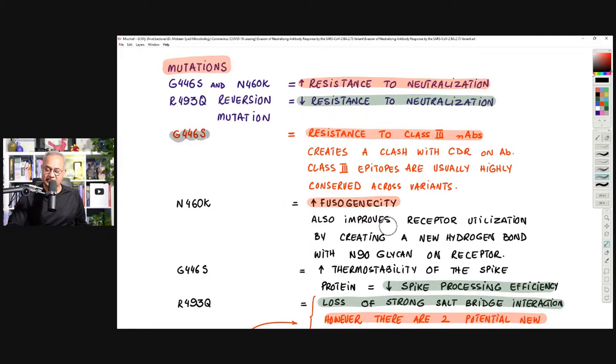And G446S has made it resistant to class 3 neutralizing antibodies. Class 3 antibodies are going to be attached to a little on the side of the spike away from the RBD. And class 3 are mostly the conserved, highly conserved epitopes of the spike. However, this mutation has allowed these class 3 antibodies to be not able to bind correctly with the spike protein, so less neutralization.